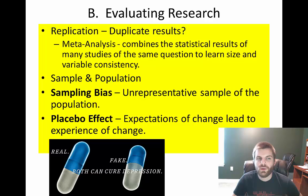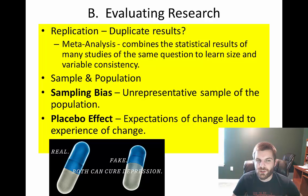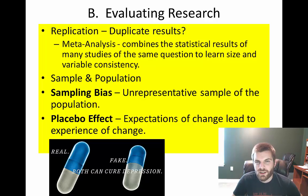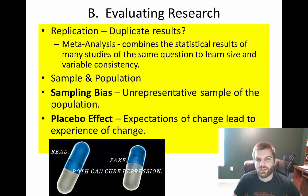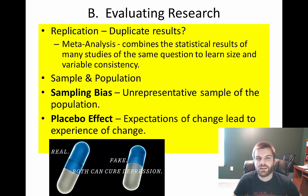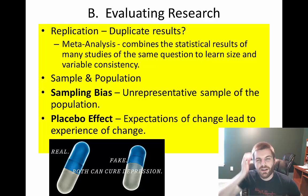One thing many psychologists do is use a process called meta-analysis, which allows them to combine the results of studies of a similar nature or addressing the same question to look at their variable consistency. For example, if somebody had a study on the effects of smoking on lung cancer and somebody else had a similar study, they may be able to apply meta-analysis as a statistical procedure to combine the results and learn about more consistency.